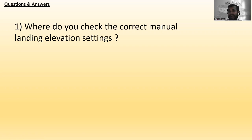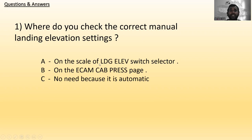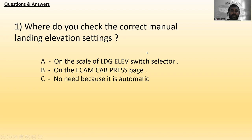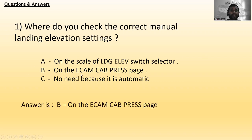Question one: Where do you check the correct manual landing elevation settings? Answer A: on the scale of the landing elevation switch selector. Answer B: on the ECAM Cabin Pressure page. Answer C: no need because it is automatic. The correct answer is B — on the ECAM Cabin Pressure page.